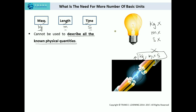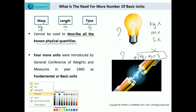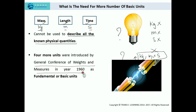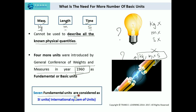So which unit should I use for light and which unit should I use for electric current? In order to solve this problem, four more units were introduced by the General Conference of Weights and Measures in the year 1960 as fundamental or basic units. That means after 1960 there were in total seven units which were considered as fundamental units as per the SI units, that is the International System of Units.